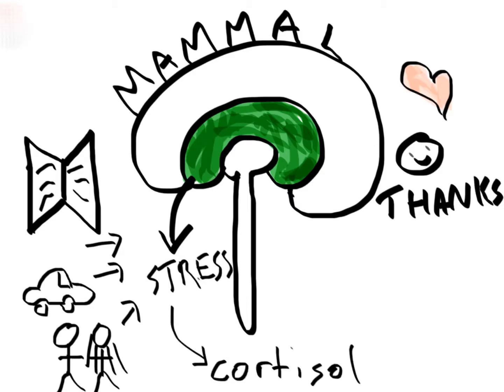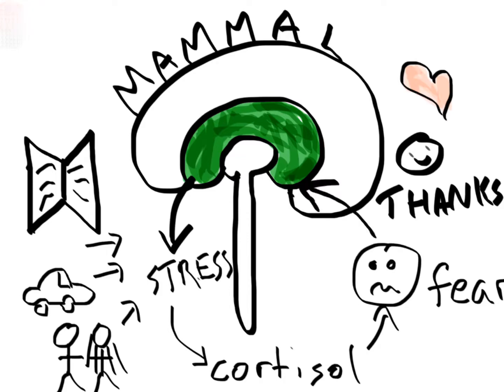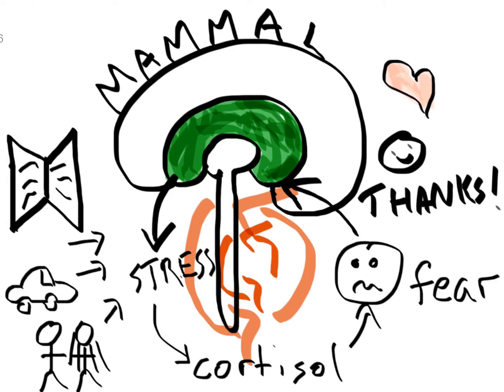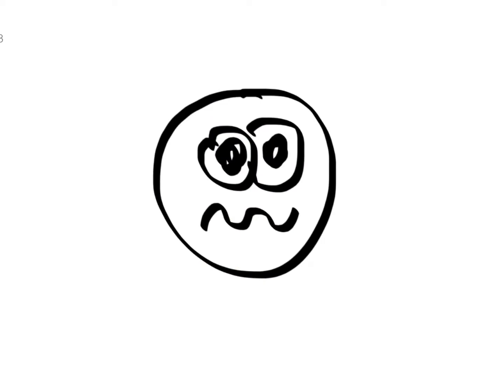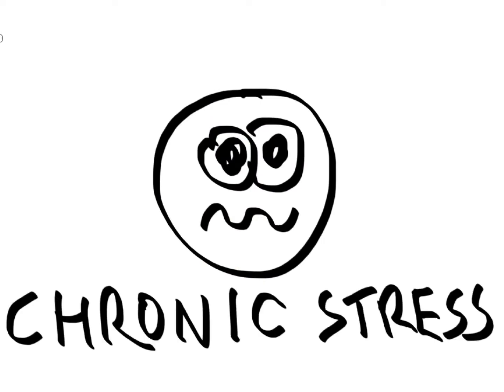So this stress can now trigger more stress, more anxieties, more worries, more fear. We pretty much get stressed about being stressed, so it's a negative feedback loop. This results in chronic stress and chronically elevated cortisol levels.